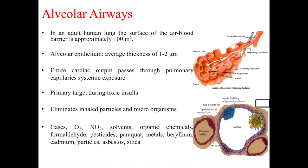The entire cardiac output passes through the pulmonary capillaries, which means the lung has systemic exposure to many toxicants, making it a primary target during toxic insult. The lung eliminates inhaled particles and microorganisms but can be damaged by certain gases like nitrogen dioxide, as well as by solvents, organic chemicals, formaldehyde, pesticides, some heavy metals, and particles like asbestos or silica.